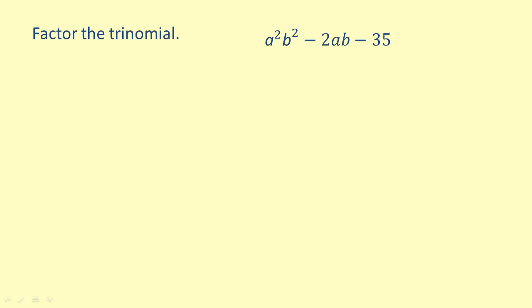Let's factor the trinomial a squared b squared minus 2ab minus 35. Notice that there is no written leading coefficient, so assume it to be 1.